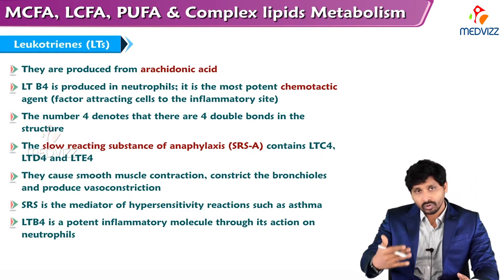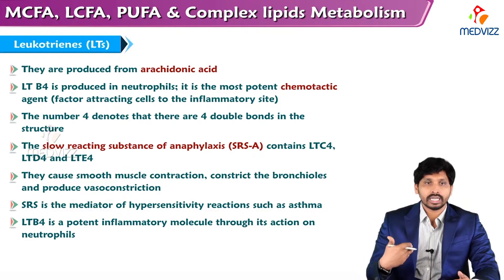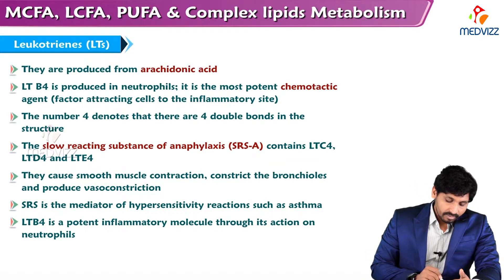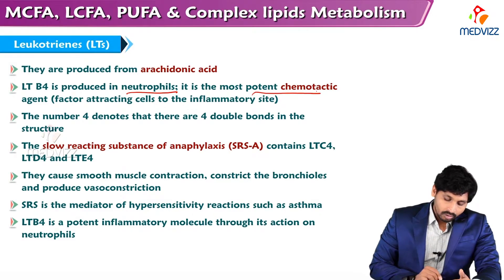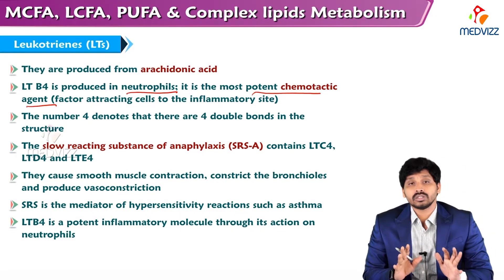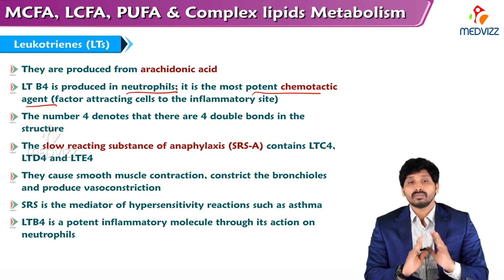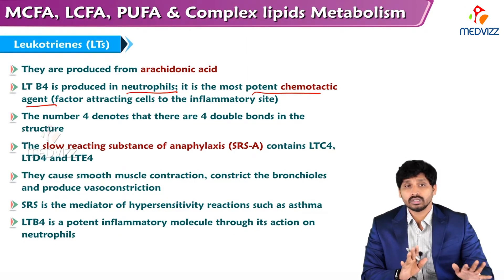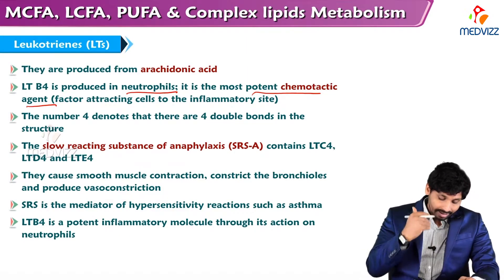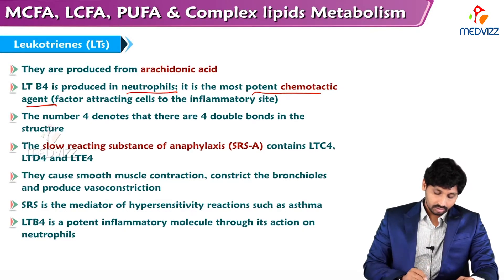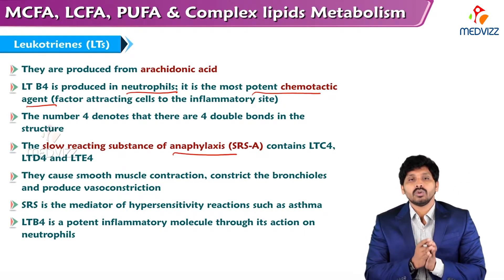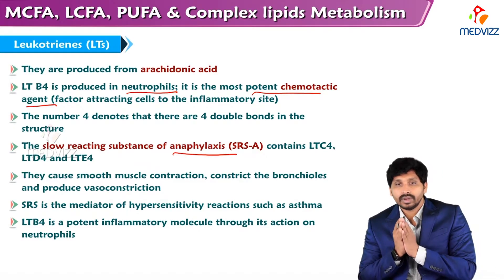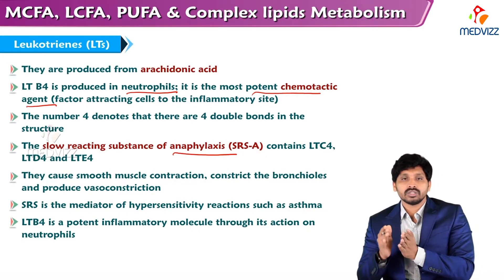Leukotrienes also come from arachidonic acid. Leukotriene B4 is produced in neutrophils; it is the most potent chemotactic agent, attracting cells to the inflammatory site. The number four denotes that there are four double bonds in the structure. The slow reacting substance of anaphylaxis (SRS-A) —